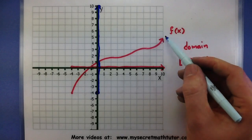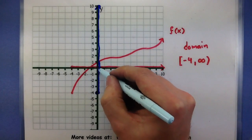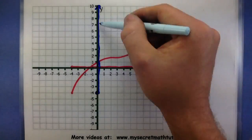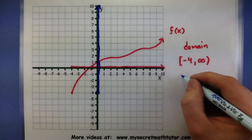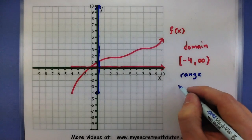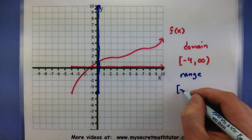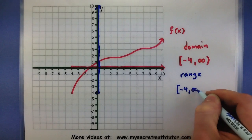And since this arrow indicates that it keeps going, I can feel free to shade in even beyond further. So my range, this is from negative 4 to infinity.